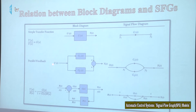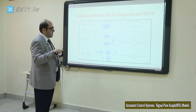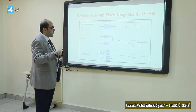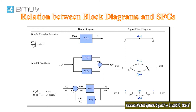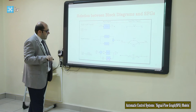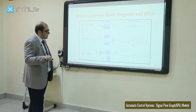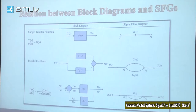In the parallel form, we have U(s), G1 and G2 branches, and Y(s). For a closed-loop system, we can draw the signal flow graph with R(s), gain 1, then G(s), and in the feedback a negative feedback with gain −H(s), and the output with gain 1.